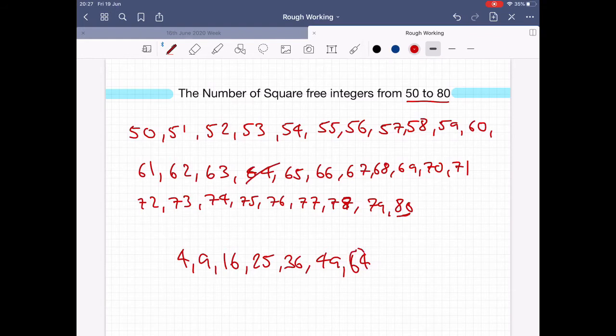We can immediately cross out 64 because it's divisible by 64. Now what's divisible by 49? Nothing, because 49 isn't in the list.